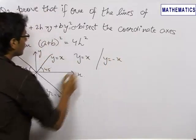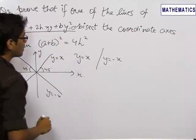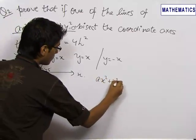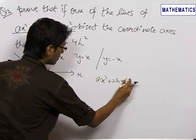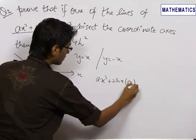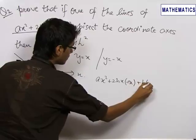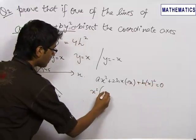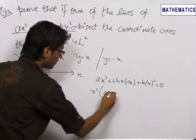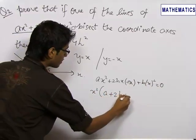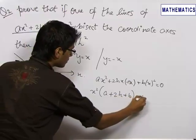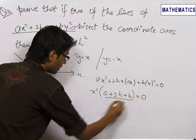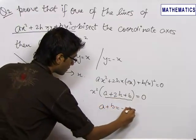So firstly, putting y equals x in the equation A x squared plus 2h xy plus b y squared equals 0, we get A x squared plus 2h x squared plus b x squared equals 0, which gives us x squared times (A plus 2h plus B) equals 0.